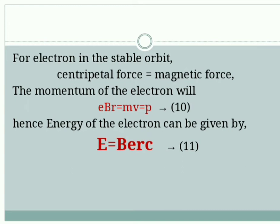For electron in the stable orbit, both the forces, magnetic force as well as centripetal force, should be balanced. From that, it is written as eBr equals Mv equals p. Hence, energy of the electron can be given by E equals Berc, where capital E represents the energy of the electron. This is the energy the electron gains within this Betatron device.